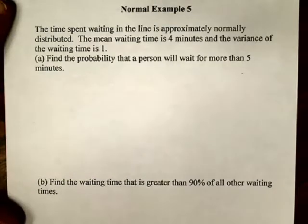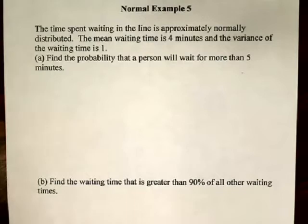And that might be reasonable. One way we could check that is if we had a bunch of waiting times, a list of waiting times, we could look at the histogram. And if that histogram looked bell-shaped, then maybe it's reasonable to model the waiting times using this normal distribution.